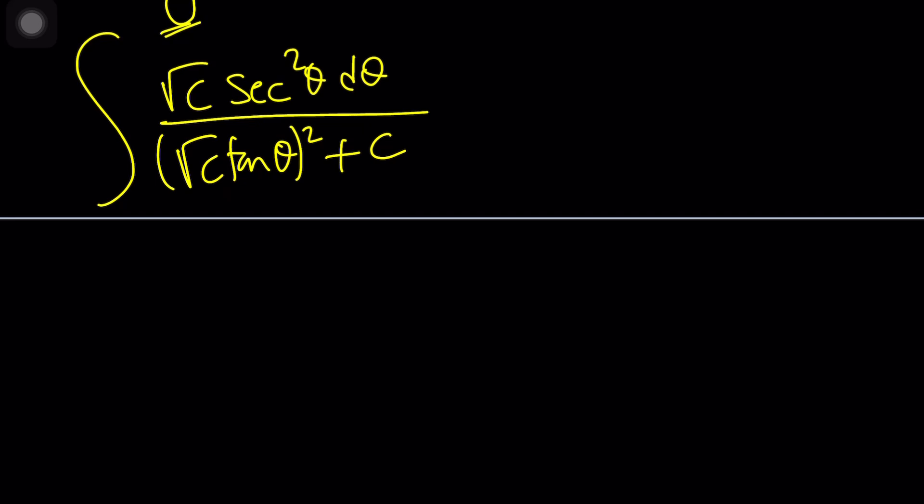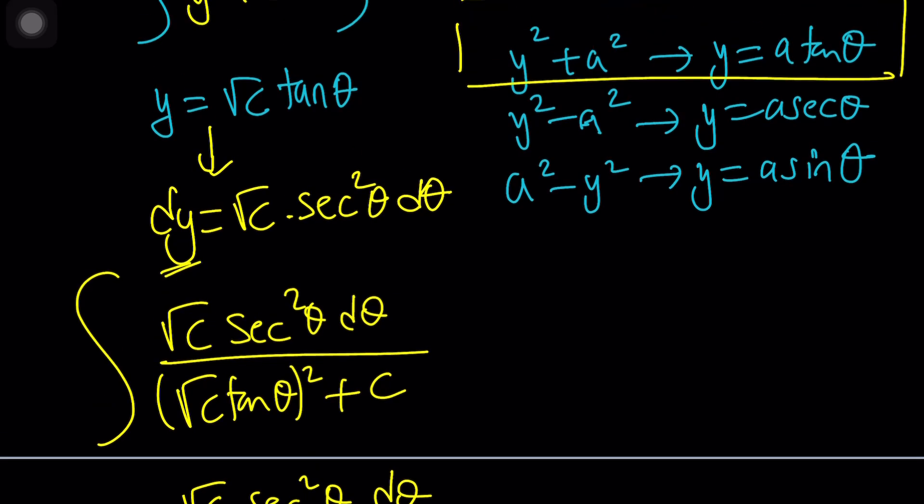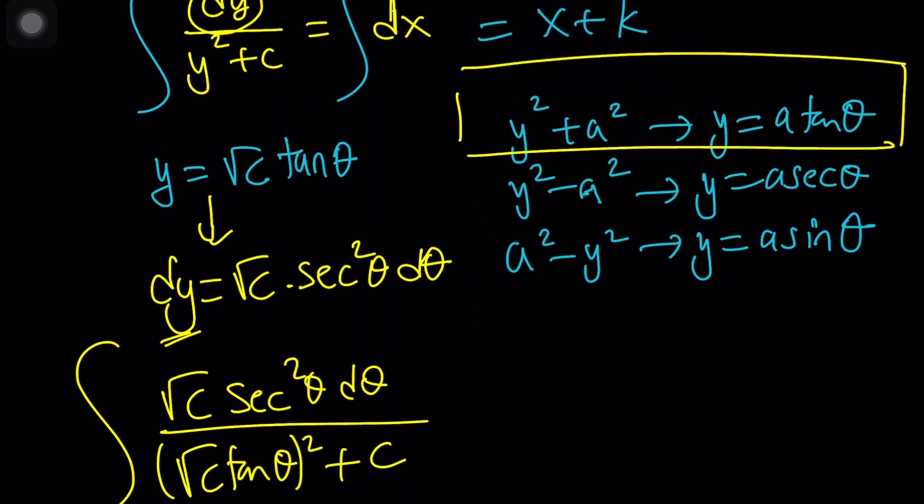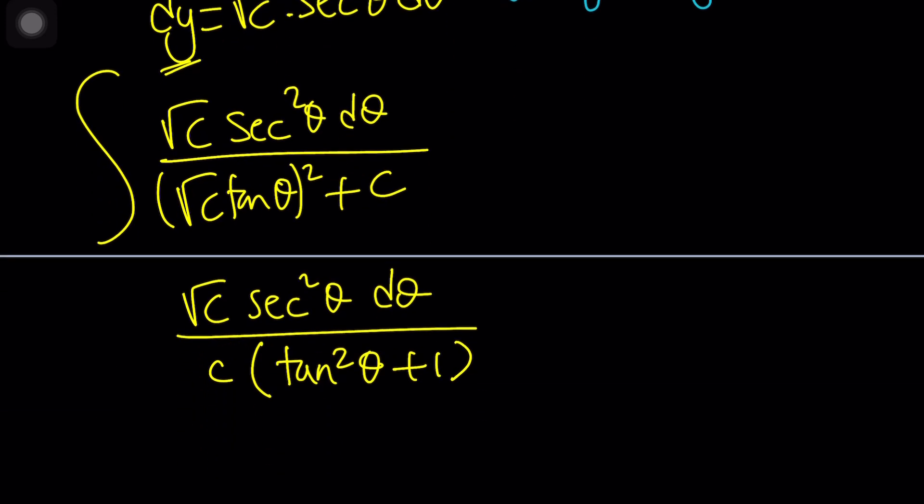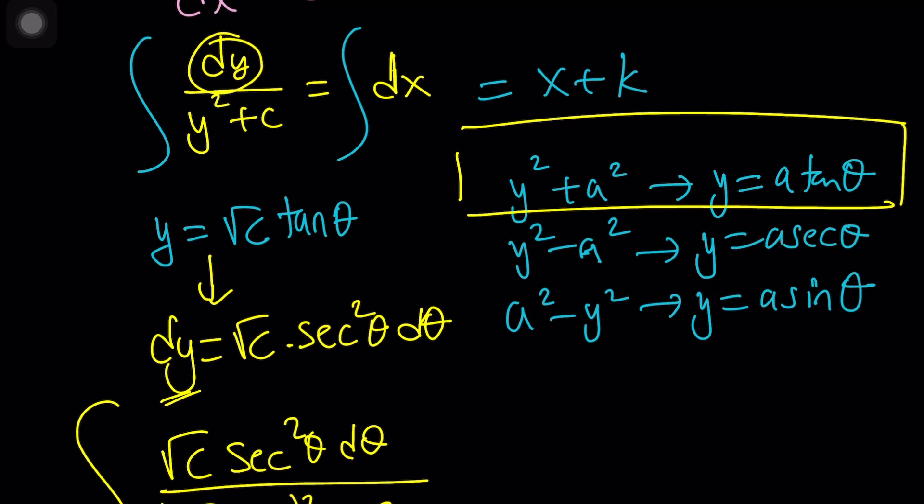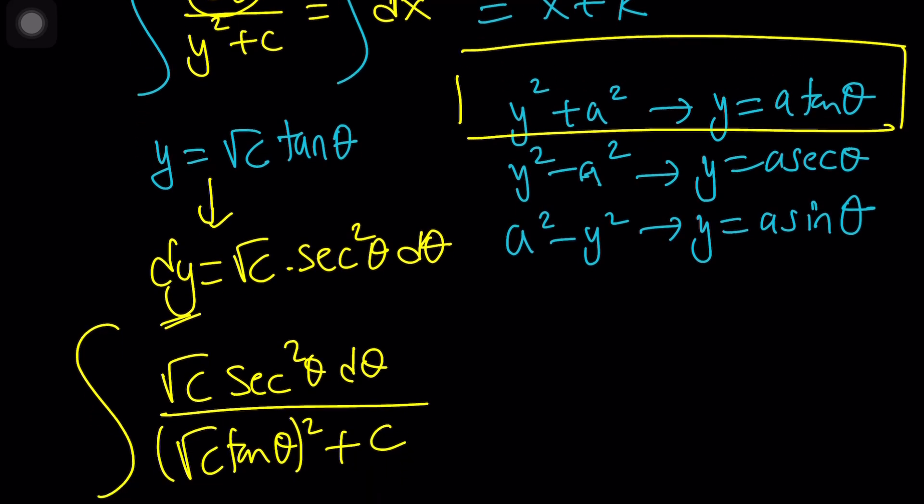Now, our integral is in terms of theta. And from here, we get root c, secant squared theta, d theta. At the bottom, we get c tangent squared, which I can, by the way, factor out as c. And that will give me tangent squared theta plus 1. Let me see. Let's make sure we don't make any mistakes about it. Square root of c, secant squared theta. That is dy. And then at the bottom, we have the y squared plus c. That should be good.